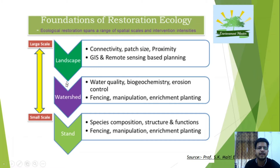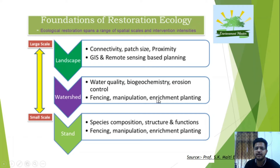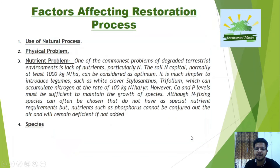At the landscape scale, tools include connectivity, patch size and proximity, GIS and remote sensing. At the watershed scale, watershed management involves water quality, biogeochemistry, erosion control, fencing, manipulation, and enrichment planting. At the species level, the focus is on species composition, structure, and function, with techniques including fencing, manipulation, enrichment, and planting.